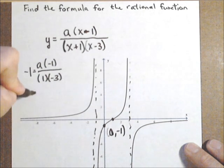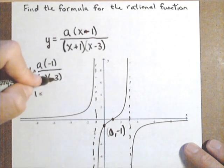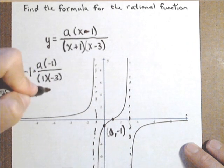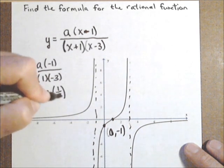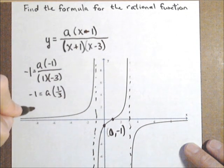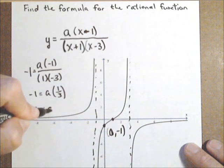So we get negative 1 equals a negative 1 third, negative 1 over negative 3, or a times 1 third. Multiplying both sides by 3, we get a equals negative 3.